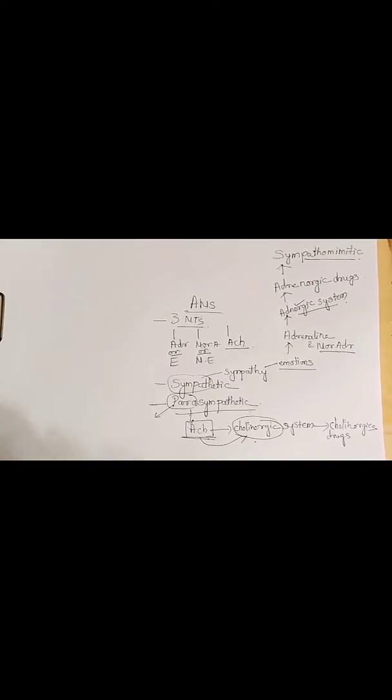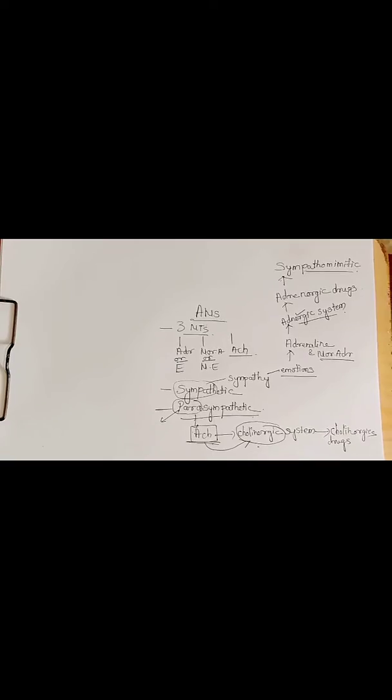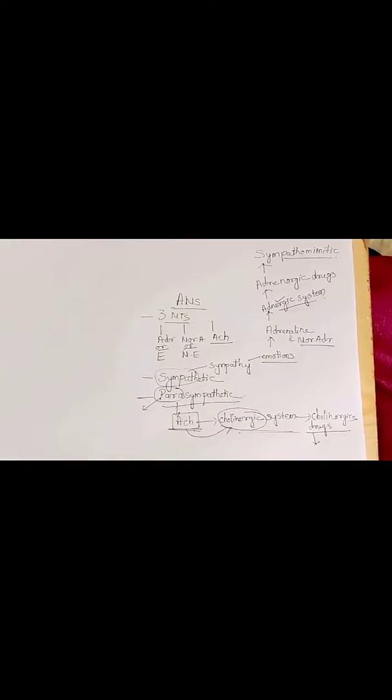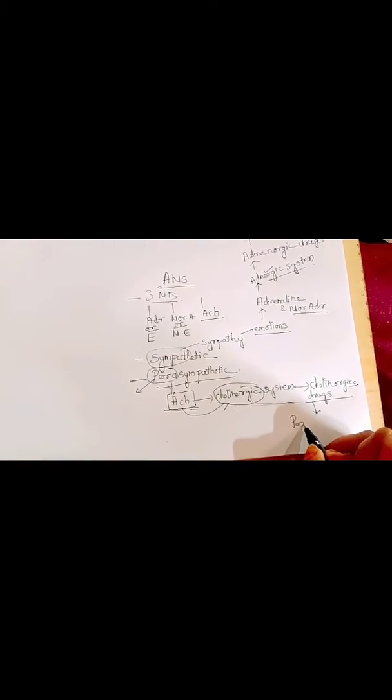Next, the parasympathetic system. Within the name we can guess: 'para-sympathetic' means beyond sudden actions — the normal functions of the body are controlled by the parasympathetic system. Here, acetylcholine is the only neurotransmitter boss. Hence it is also known as the cholinergic system. Drugs acting on the cholinergic system are called cholinergic drugs, and drugs that mimic acetylcholine are known as parasympathomimetics.